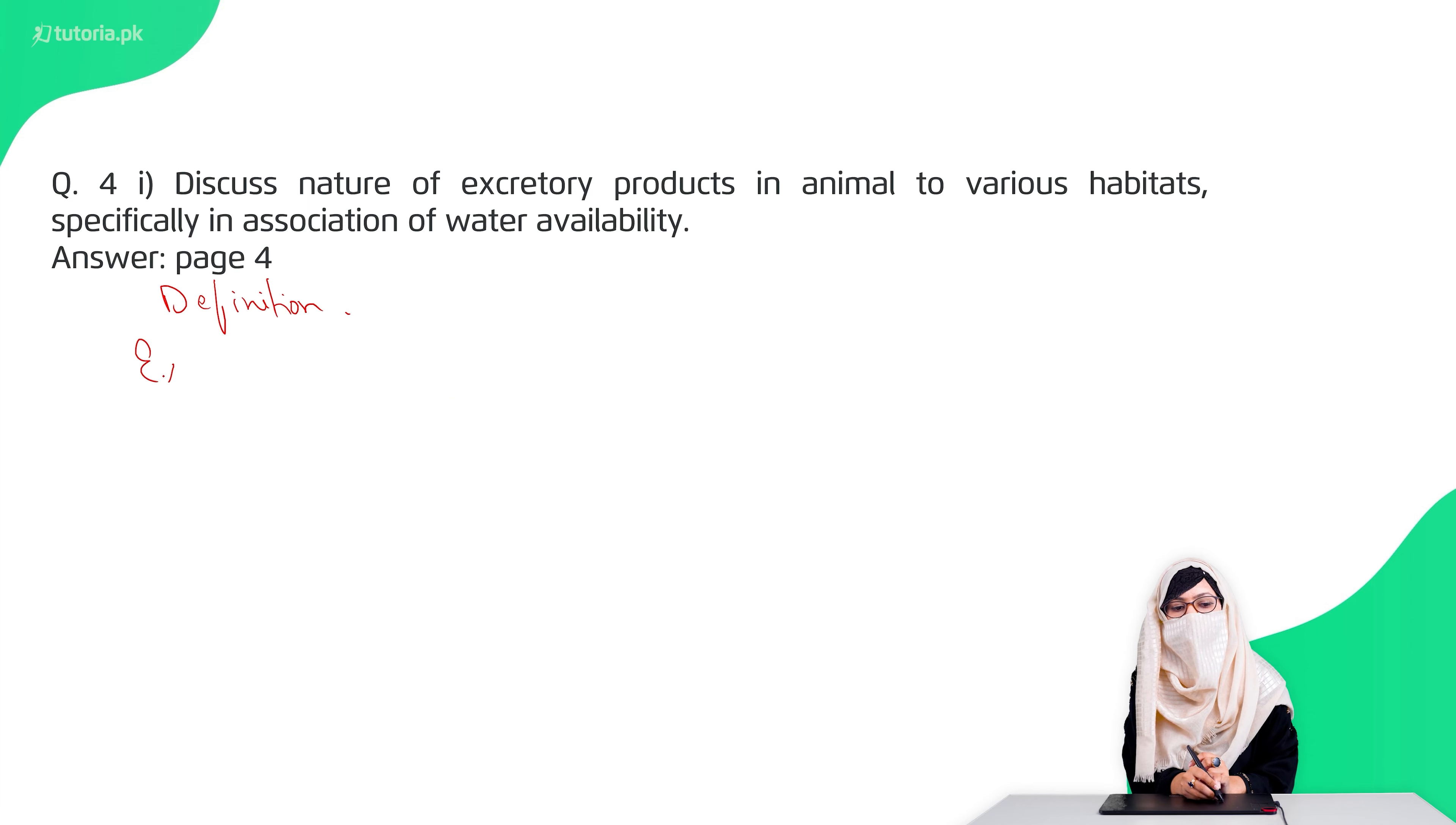Then you have to tell what excretory products are. Then you have to tell ammonia, urea and uric acid and how it depends on the water conditions. Because the amount of water is required to dissolve, you have to explain it. This is the page number 4.